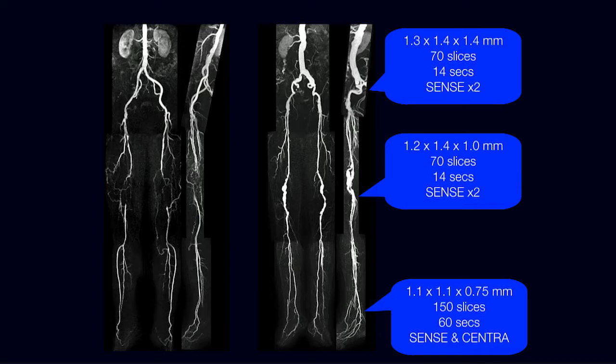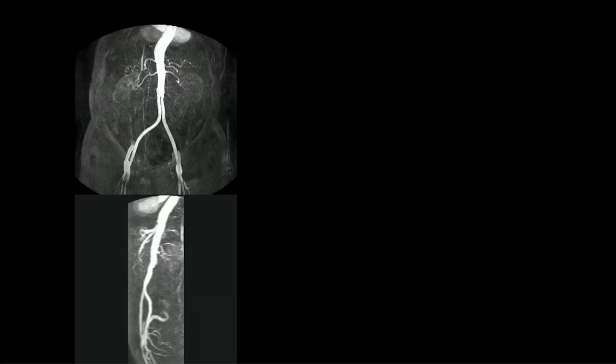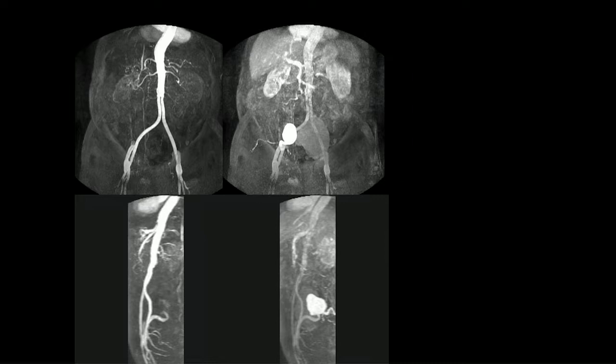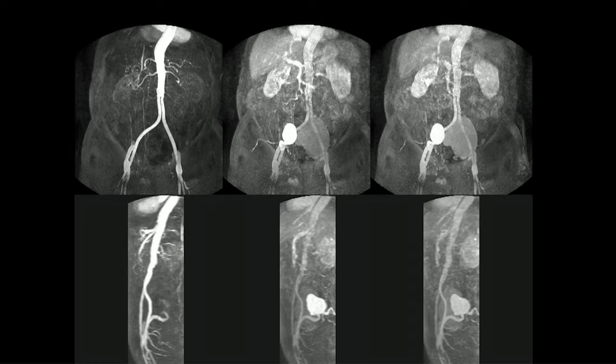Some patients will have such quick arteriovenous transit that venous suppression won't always work. For dynamic acquisition we want to see different phases of contrast passage through the arterial bed. An early example — done with standard K-space encoding — shows a patient with an aorto-bifemoral graft in the first-pass arterial phase, then later filling of retrograde aneurysms in the pelvis. Each acquisition was about 15 seconds, so it's pseudo-dynamic rather than true dynamic, but it was the first kind of example we did in Glasgow many years ago.